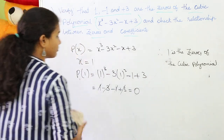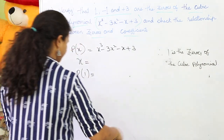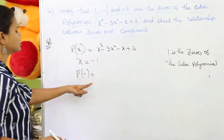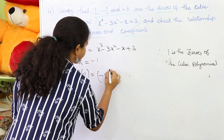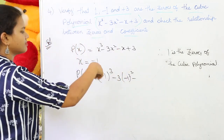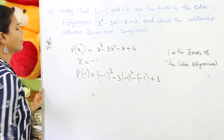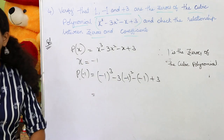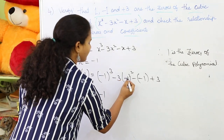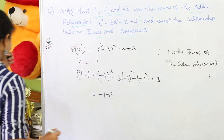Now let's go for the second one. If x = -1, then p(-1) = (-1)³ - 3(-1)² - (-1) + 3. We calculate: (-1)³ = -1, and (-1)² = 1, so 3 × 1 = 3, giving -3. Then minus of minus 1 becomes +1, plus 3.